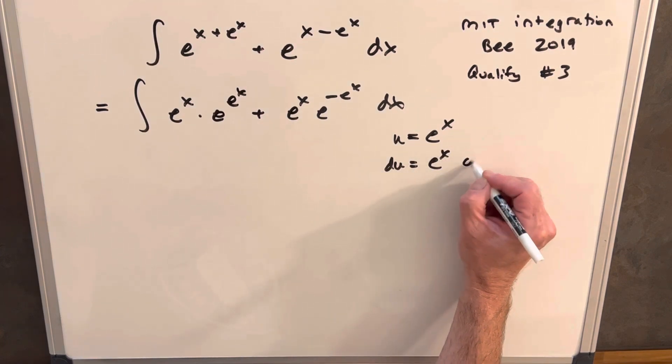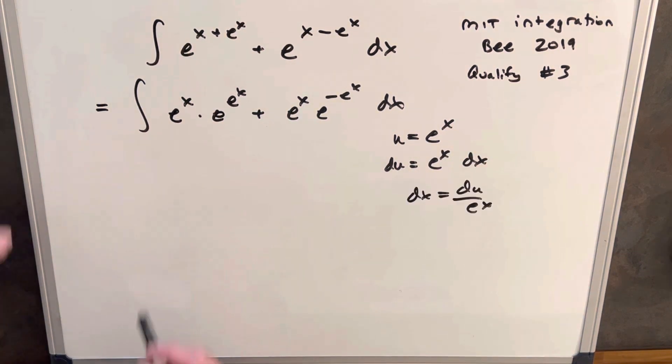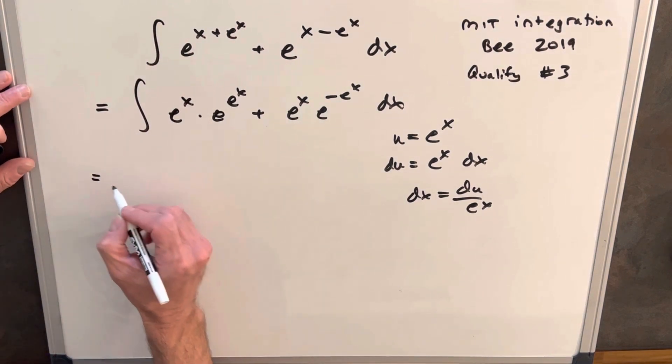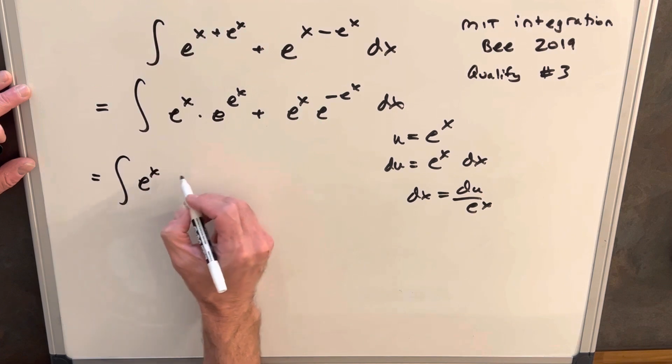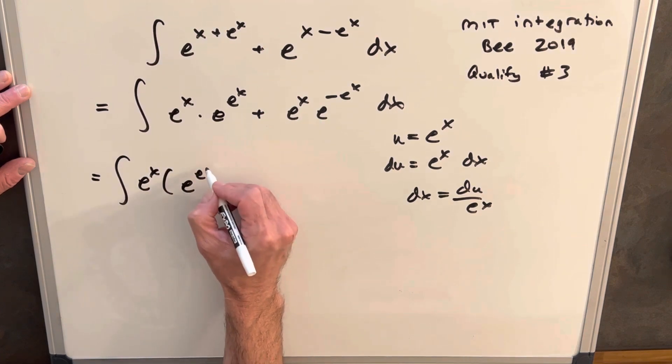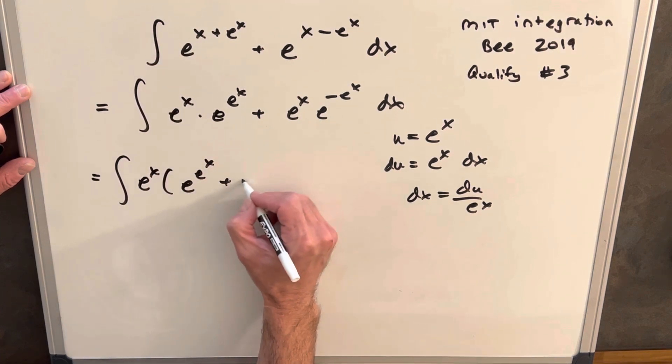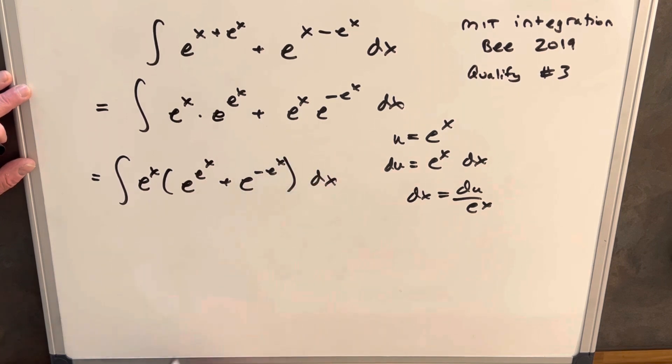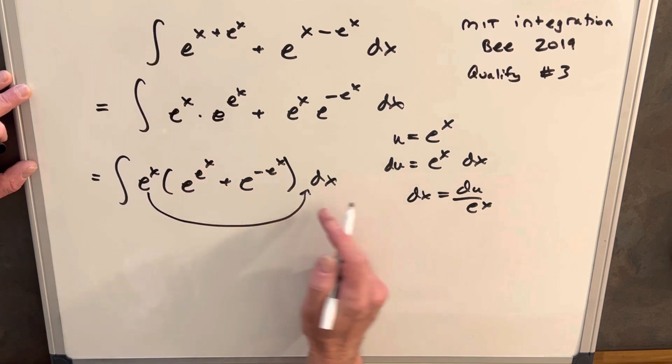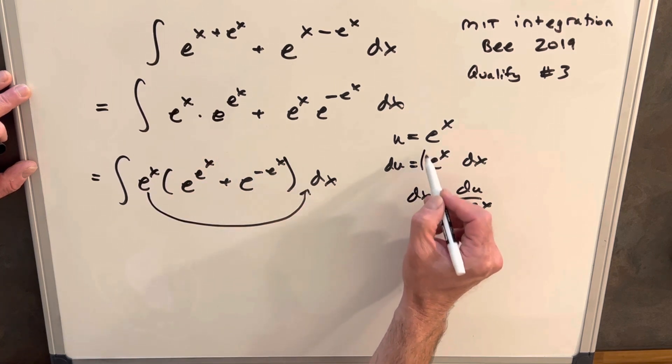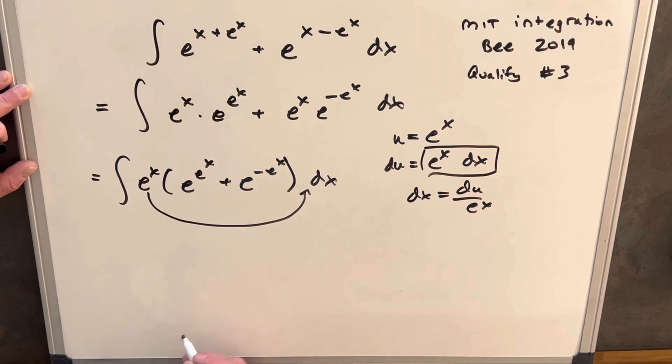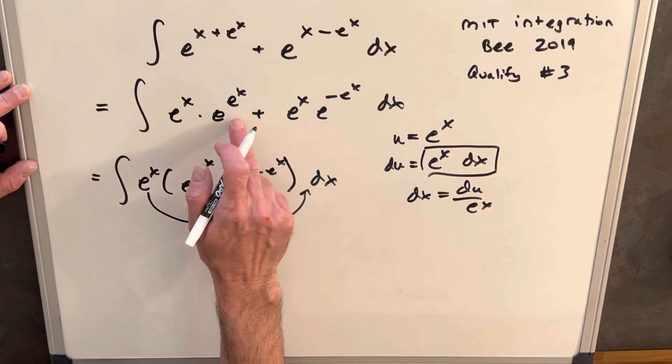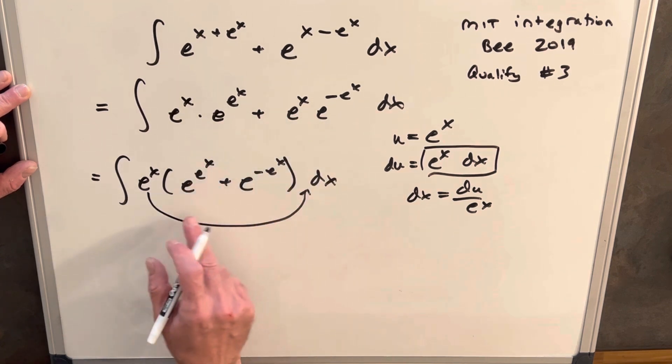What I could do is I could factor in e to the x out here so we could rewrite this: e to the x times e to the e to the x plus e to the minus e to the x dx. But then if you just visualize this over here, this is exactly our du value.